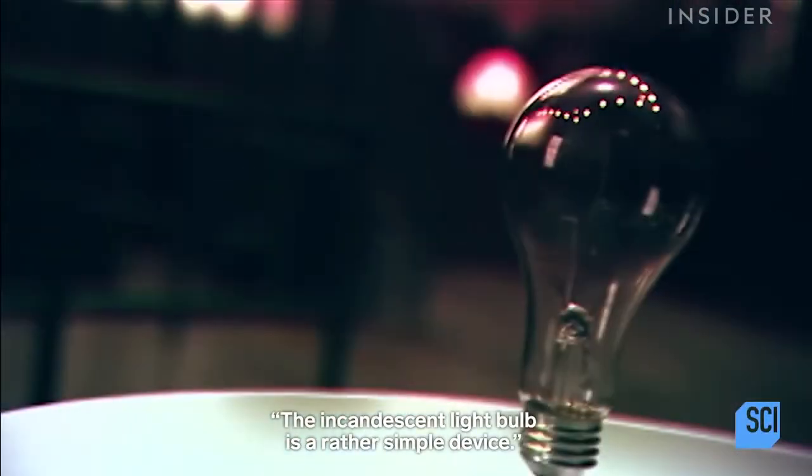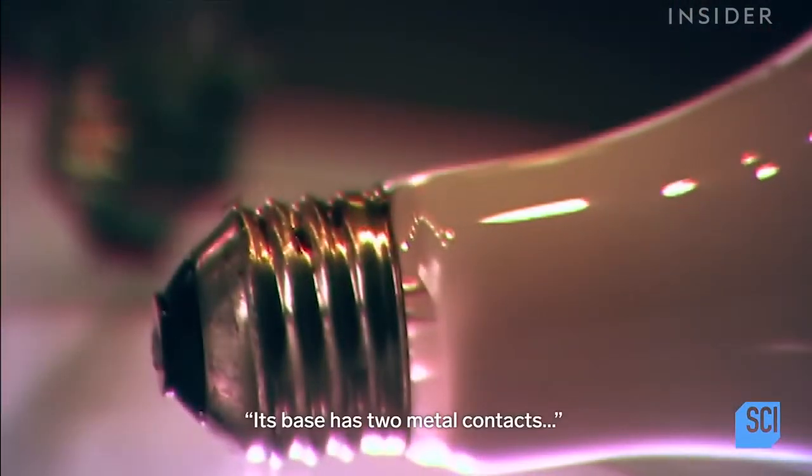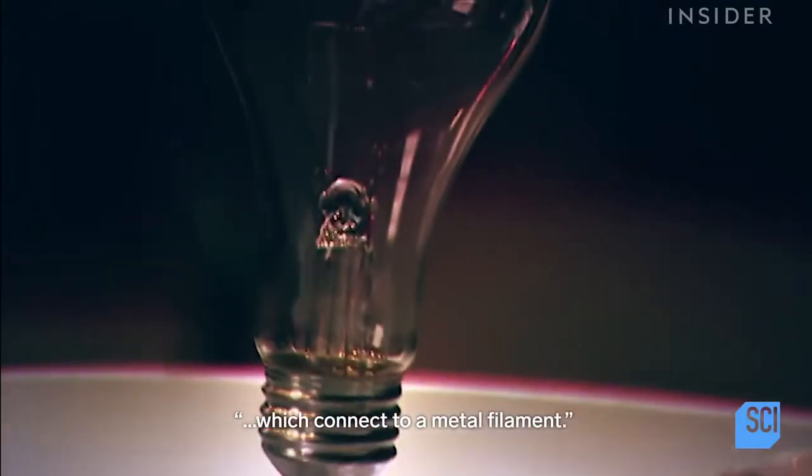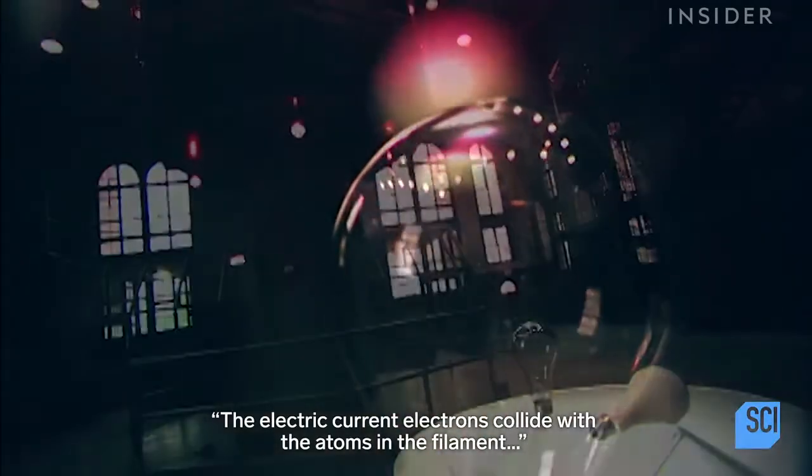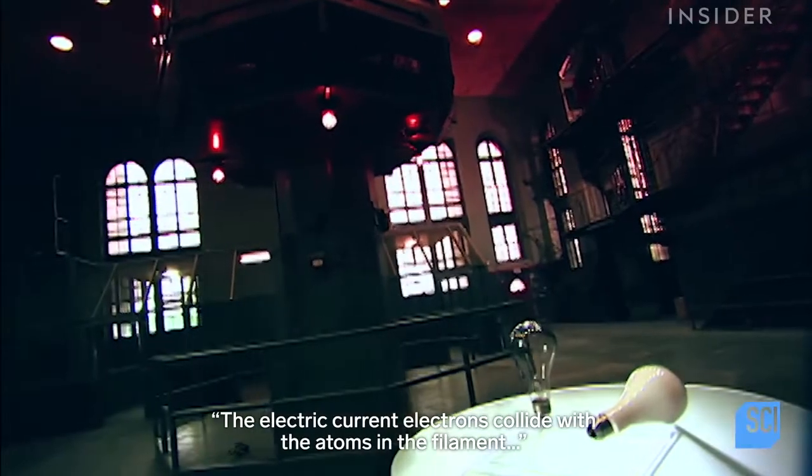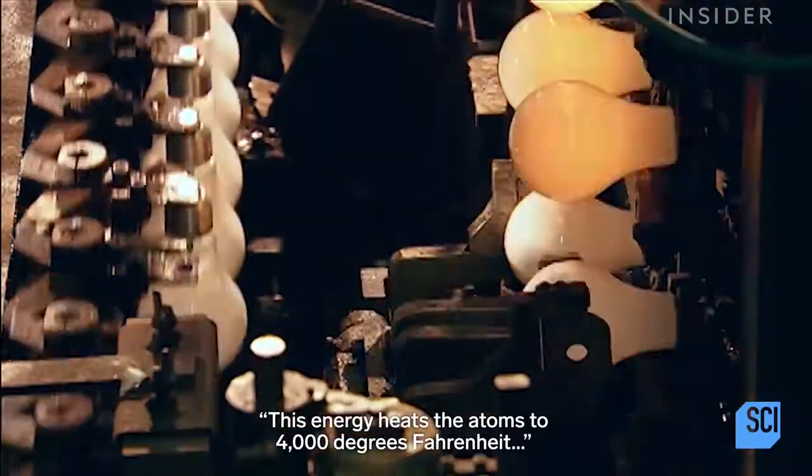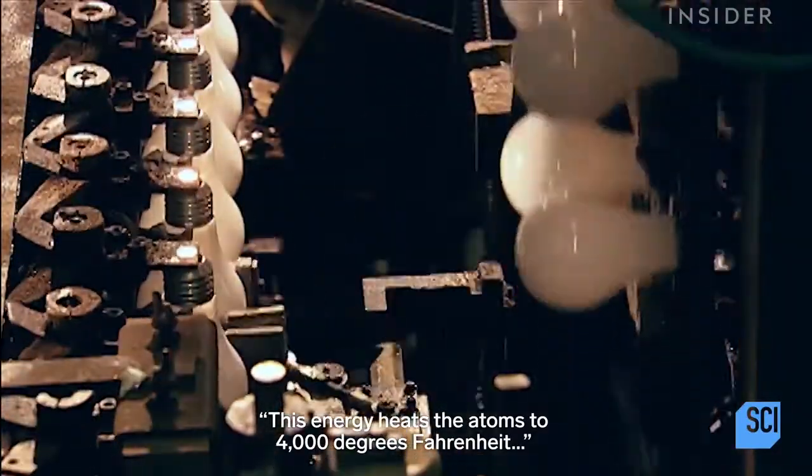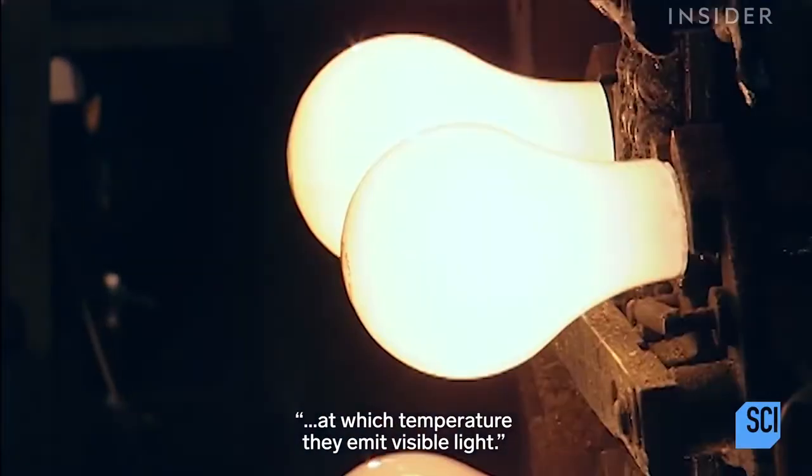The incandescent light bulb is a rather simple device. Its base has two metal contacts which connect to a metal filament. The electric current's electrons collide with the atoms in the filament, making them vibrate. This energy heats the atoms to 4,000 degrees Fahrenheit, at which temperature they emit visible light.